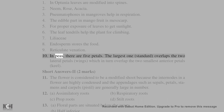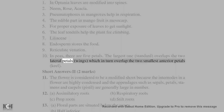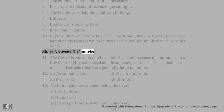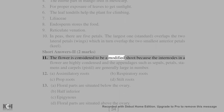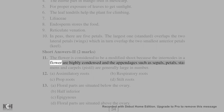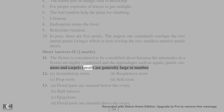10. In peas there are 5 petals. The largest one (standard) overlaps the two lateral petals (wings), which in turn overlap the two smallest anterior petals (keel). Short answers (2 marks): 11. The flower is considered a modified shoot because the internodes in a flower are highly condensed and the appendages such as sepals, petals, stamens, and carpels (pistil) are generally large in number.